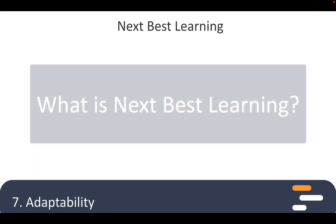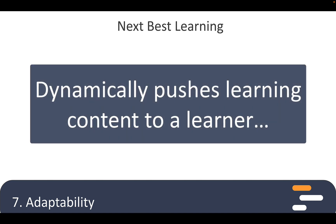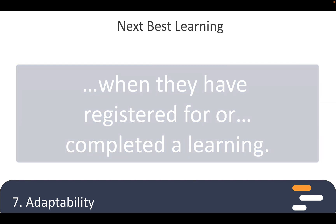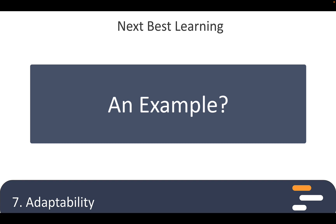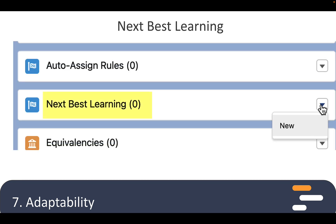Another idea you had for adaptability was using a feature called Next Best Learning. What is this and how does it work? Next Best Learning dynamically pushes the next learning to a user when they've either registered for or completed a learning. For example, if a user completes an introductory course, Opinium can automatically assign the next piece of learning — and the learning admin gets to determine what that piece is. To set it up, start on the item you want assigned next, click New by Next Best Learning, and select the learning item that will precede it.